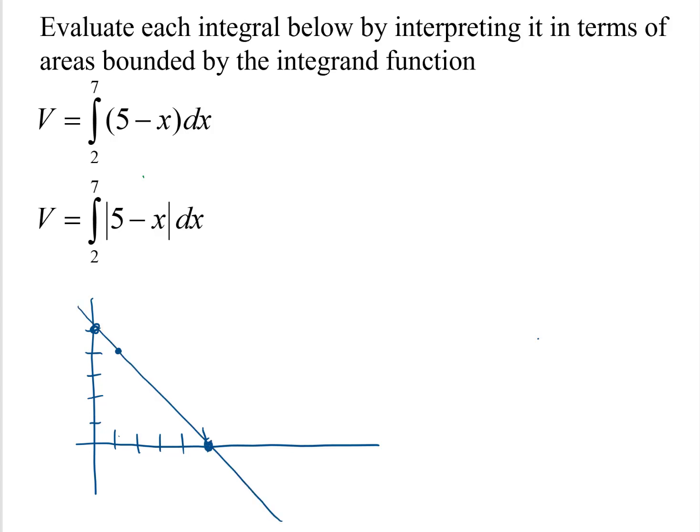So there's our line, and now we're also interested in this from 2 to 7. So here is 5, there's 7, here's 2. So we're supposed to interpret it in terms of area, so we're going to start at 2 here and go to 7.